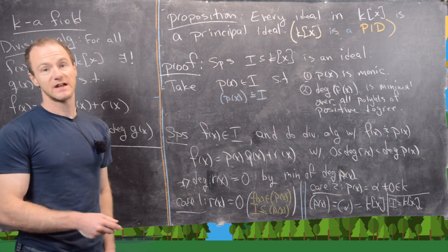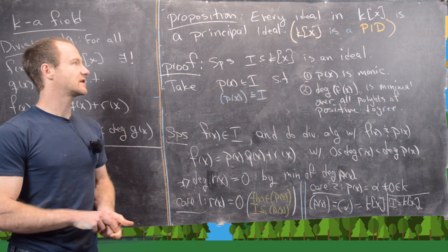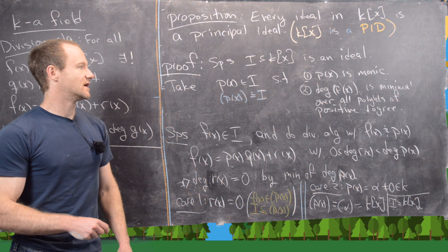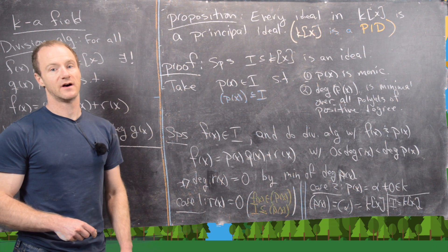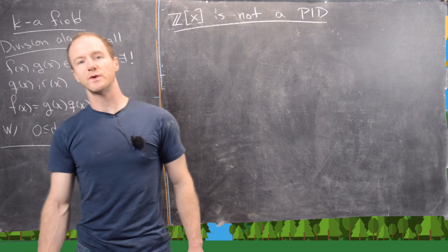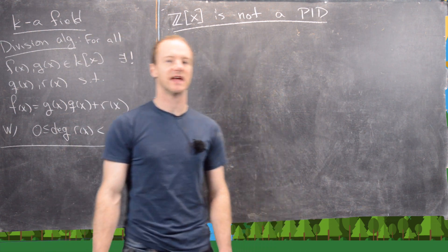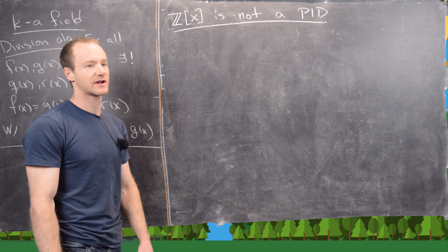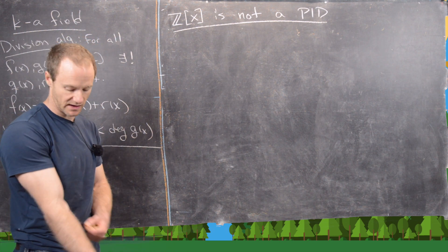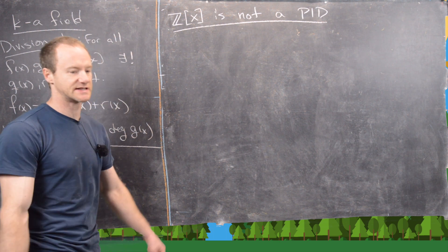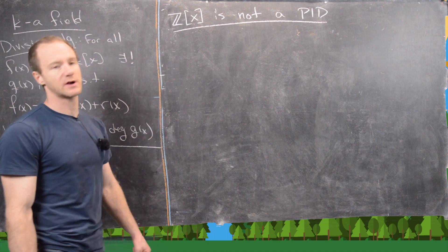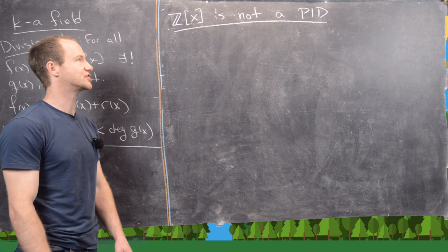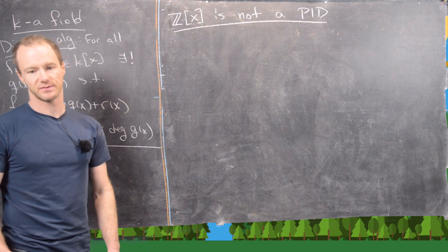That finishes the proof. We just showed that K[x], where K is any field, is a principal ideal domain — in other words, every ideal is a principal ideal generated by a single element. Now we want to show a non-example if we don't have a field. We don't have to go too far: Z[x], polynomials with coefficients in the integers, is not a principal ideal domain.